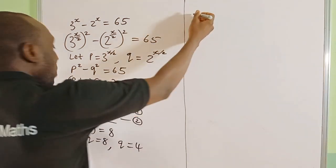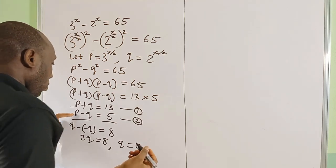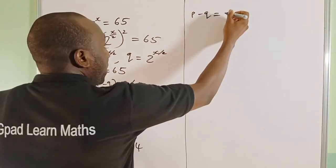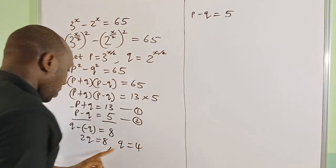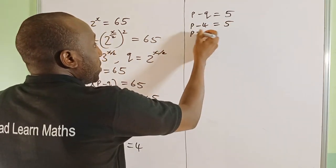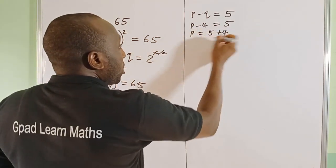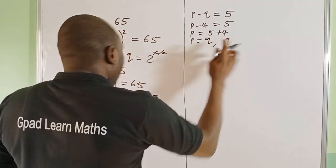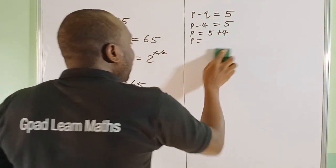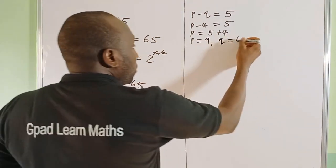So 2q = 8, which gives q = 4. Now to find p, using equation 2: p − q = 5, and substituting q = 4 gives p − 4 = 5, so p = 9. Therefore p = 9 and q = 4.